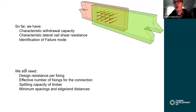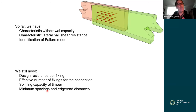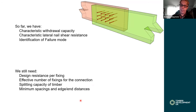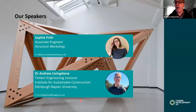To round up: we have the characteristic withdrawal capacity and the characteristic lateral nail shear resistance, and we've identified the failure mode of the connection. What we don't have time to show today, but is straightforward to continue with, is the design resistance per fixing, the effective number of fixings for the whole connection, and then the splitting capacity of the members — which relates to edge and end distances and the spacing between fasteners. Thank you very much.